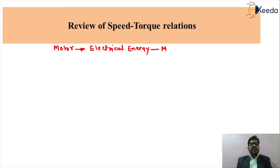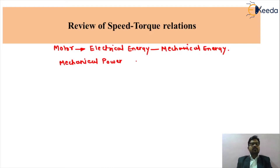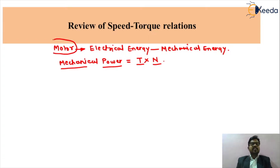The mechanical energy generated from motoring is called mechanical power. The fundamental formula of mechanical power is: mechanical power is equal to the product of torque (T) into speed (N). This is the basic fundamental formula, and the mechanical power from your motor is obtained from this basic equation of torque and speed.